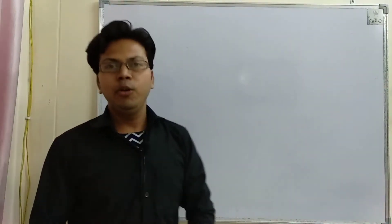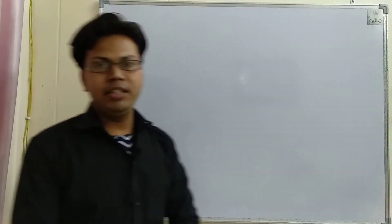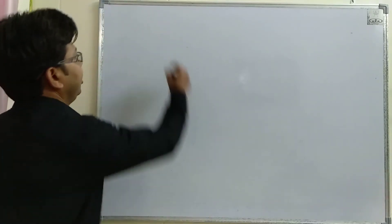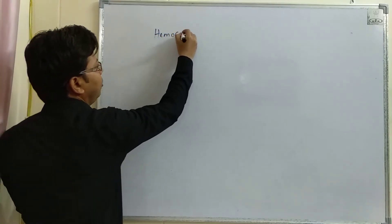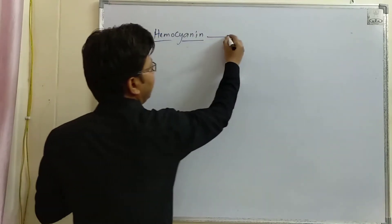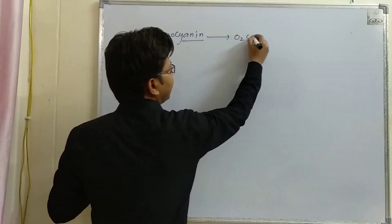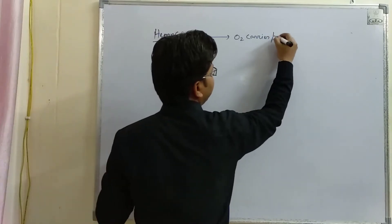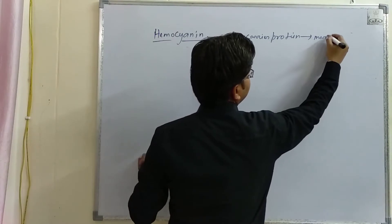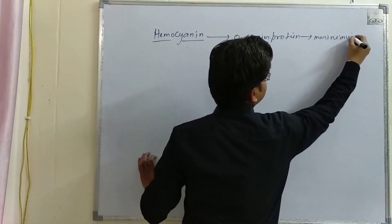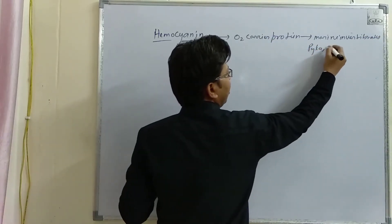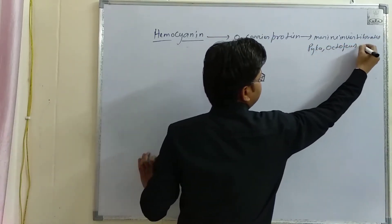Hello guys, today we will discuss about another oxygen carrier protein called Hemocyanin. Hemocyanin is an oxygen carrier protein found in marine invertebrates like Pilar, Octopus, etc.